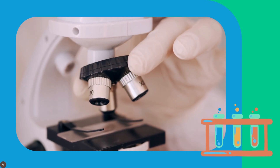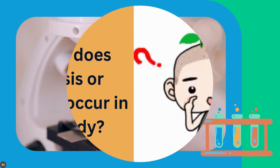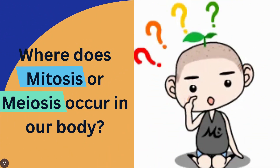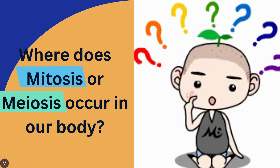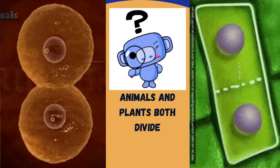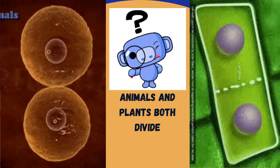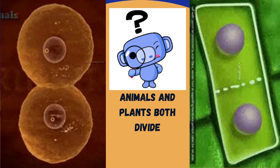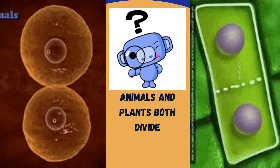The dividing cell is called the parent cell, and the two new cells formed are known as daughter cells. Mitosis and meiosis are two types of cell division taking place in both plants and animals. Mitosis is the type of division that occurs in the somatic cells of animals and plants. It is the division of cells to form two new cells that are exactly alike.